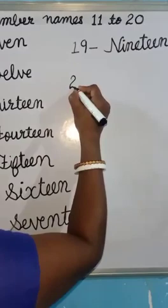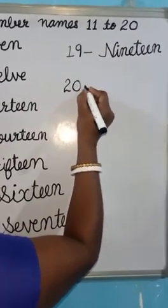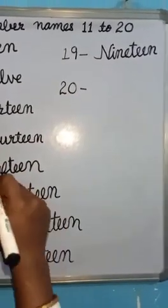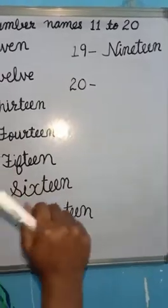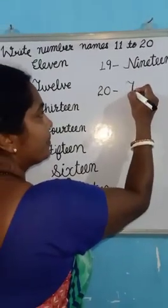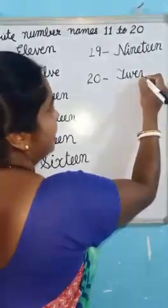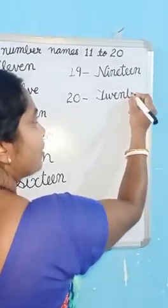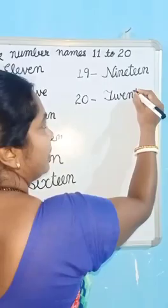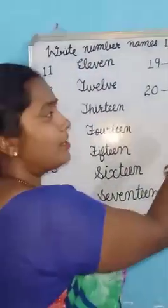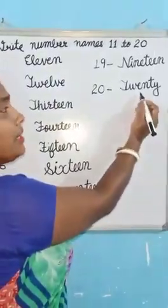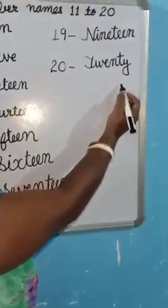And last is 2-0, 20. And the spelling of 20 is T-W-E-N-T-Y. Repeat again. T-W-E-N-T-Y, 20. Okay?